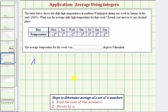So to find the average daily high temperature for this week, we first want to find the sum of the temperatures. So we'd have negative three plus one plus negative two plus three plus six plus zero and plus five.